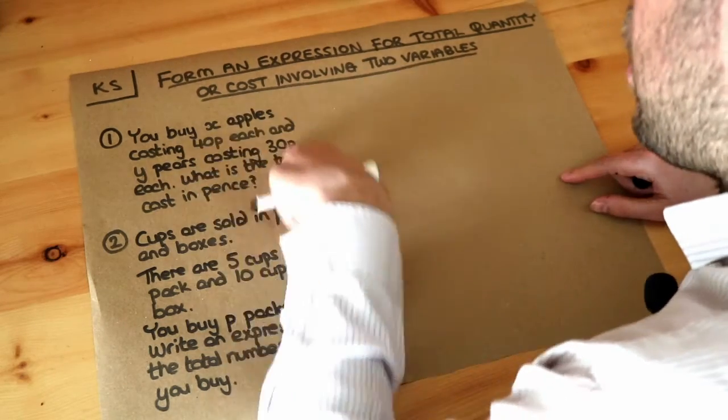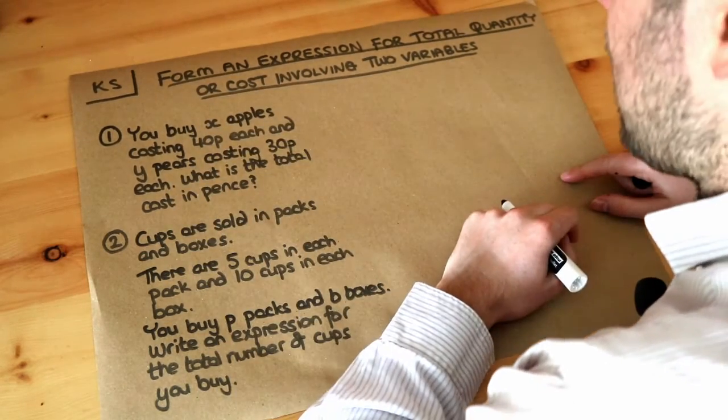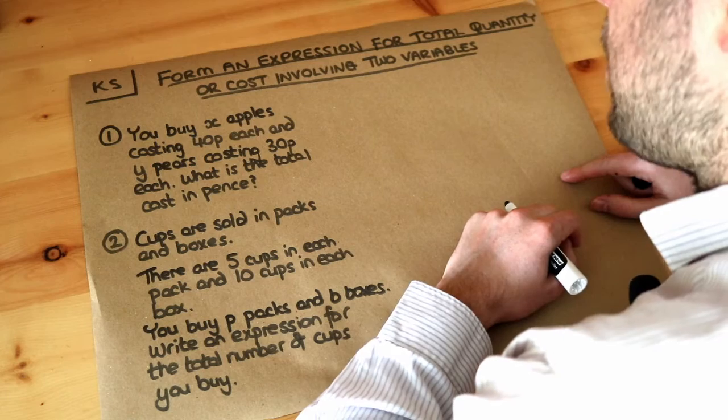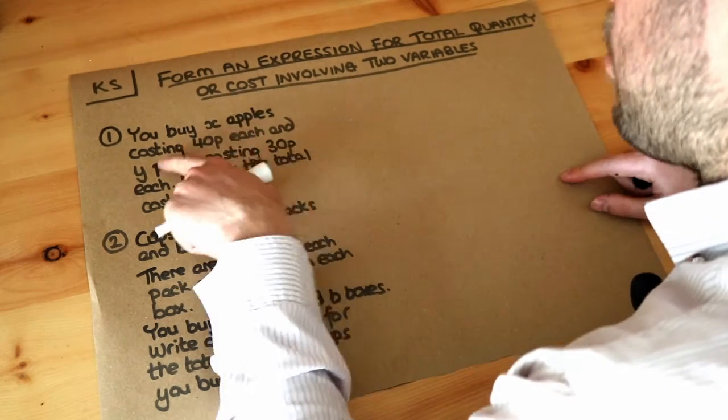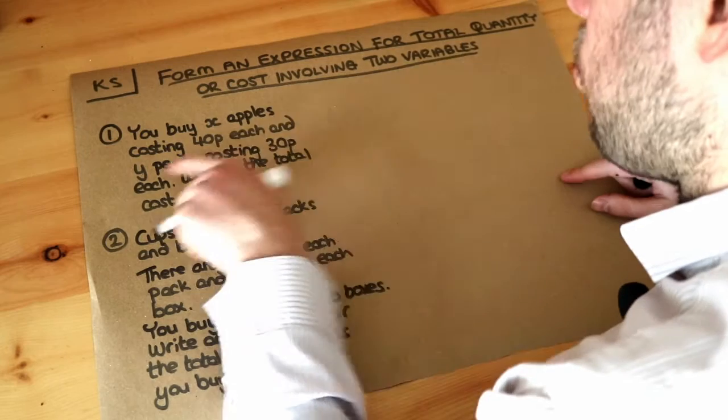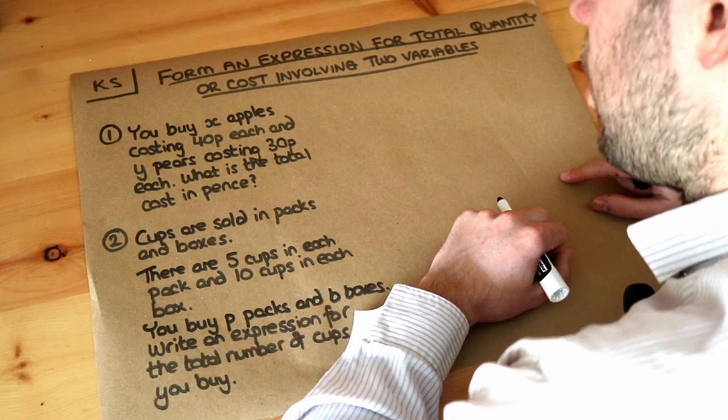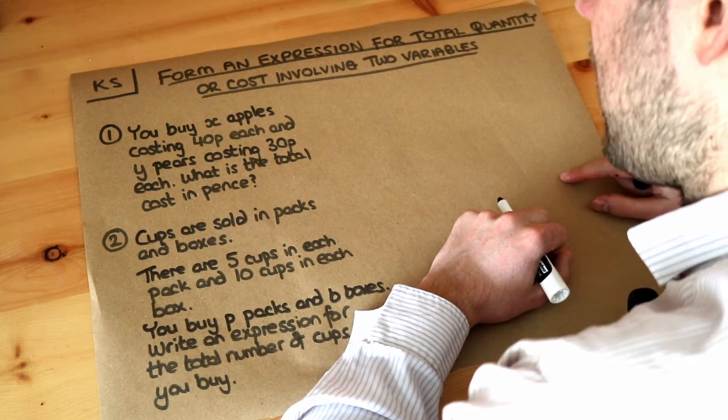Now we want to turn this sentence into an algebraic expression. So let's think about the information we've got. You buy x apples costing 40p each and y pairs costing 30p each. What is the total cost in pence?